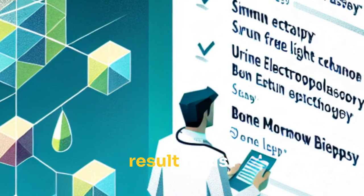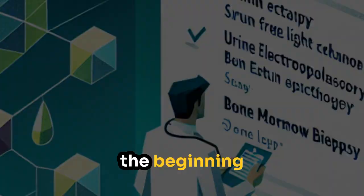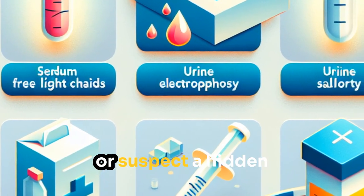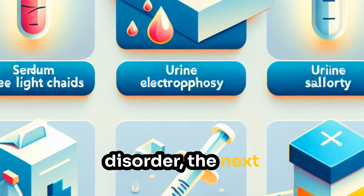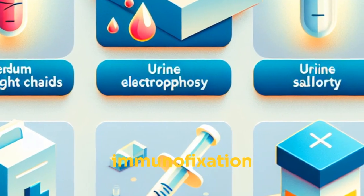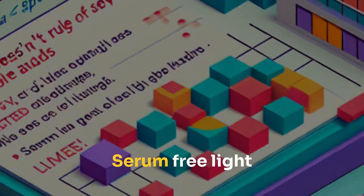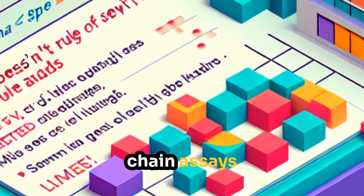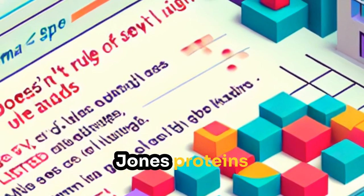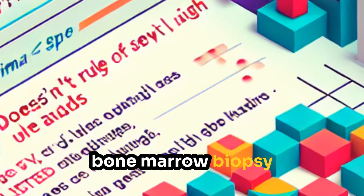Finding an abnormal result is just the beginning. If you see an M-spike or suspect a hidden disorder, the next steps might include immunofixation to identify the specific antibody, serum-free light chain assays, urine electrophoresis to check for Benz-Jones proteins, and in some cases a bone marrow biopsy.